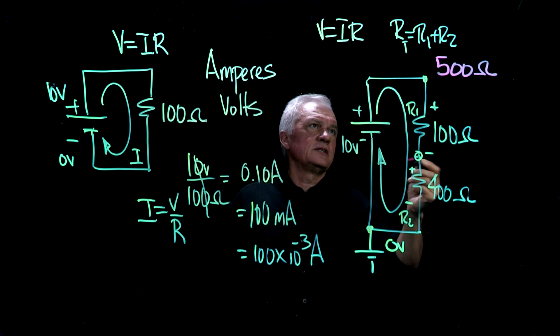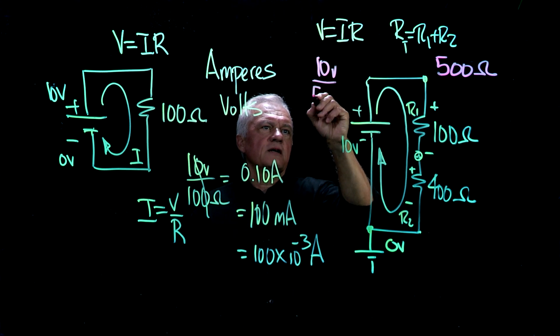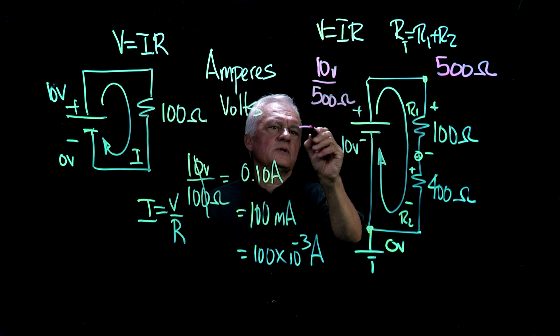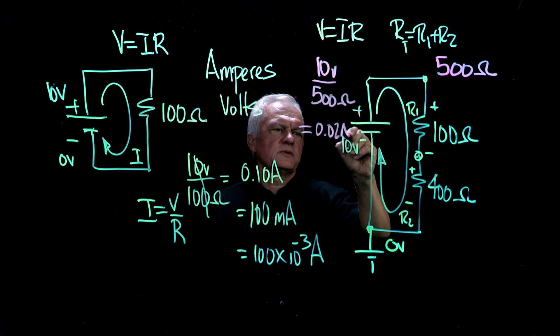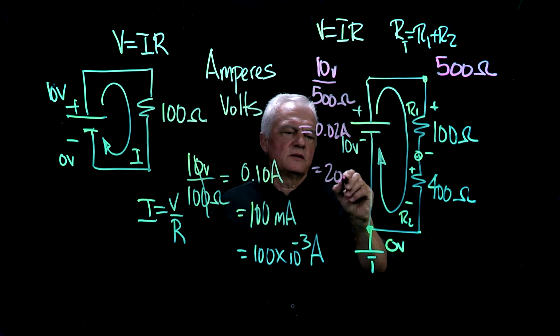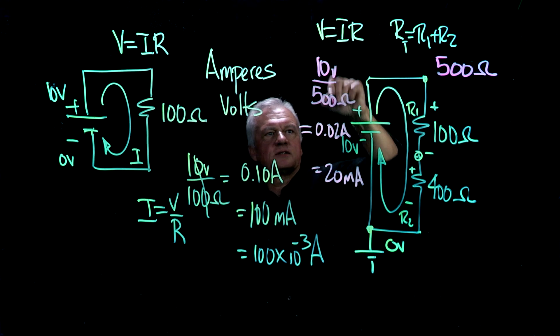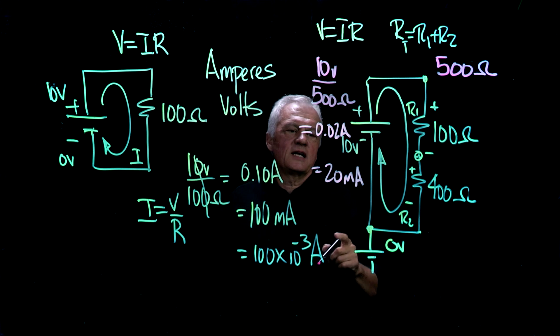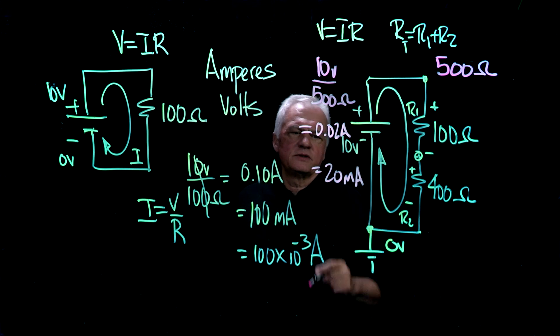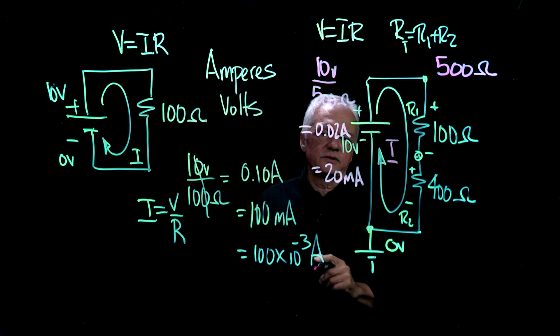Then, this current that is flowing is equal to 10 volts divided by 500 ohms. And that equals 0.02 amps, which is equal to 20 milliamps. So I want you to check my math. So that's 1 divided by 50. That's 0.1 divided by 5. 0.02, 20 milliamps. We have 20 milliamps running through this circuit. That's the I flowing through this circuit.